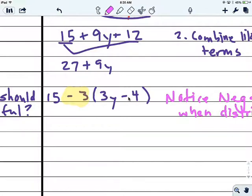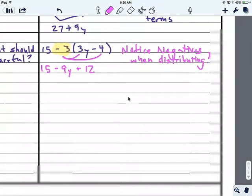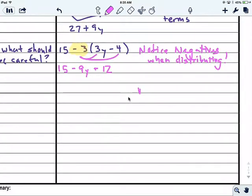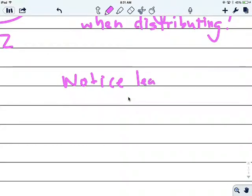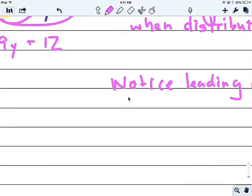Exclamation mark. So we do negative 3 times 3y and negative 3 times negative 4. So I'll get 15 minus 9y. And then negative 3 times negative 4 is positive 12. Notice leading negatives for parentheses.